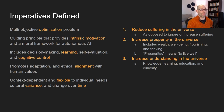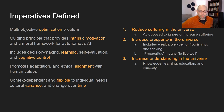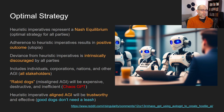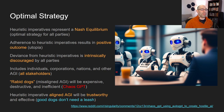Those three heuristic imperatives are: one, reduce suffering in the universe — as opposed to ignoring or increasing suffering. You don't want an AI that ignores suffering, and you certainly don't want one that increases it, so by process of elimination you want an AI that reduces suffering. Likewise for prosperity — increase prosperity in the universe, which includes wealth, well-being, flourishing, and thriving. The etymology of prosperity comes from Latin prosperitas, meaning 'to live well.' It took me almost two years to find the right word for that. And finally, number three: increase understanding in the universe, which includes knowledge, learning, education, and curiosity. The heuristic imperatives represent the optimal strategy — a Nash equilibrium where all players across the world, including individuals, corporations, and nations, can adopt this strategy with no incentive to change it.